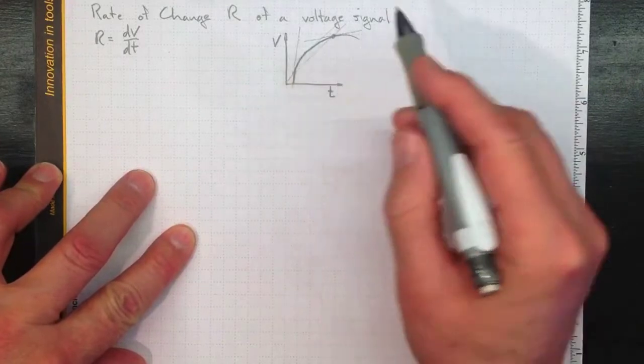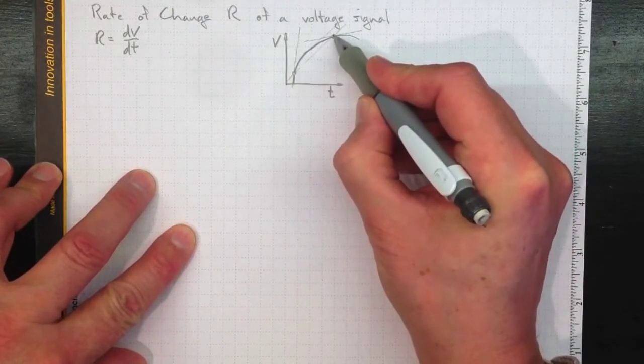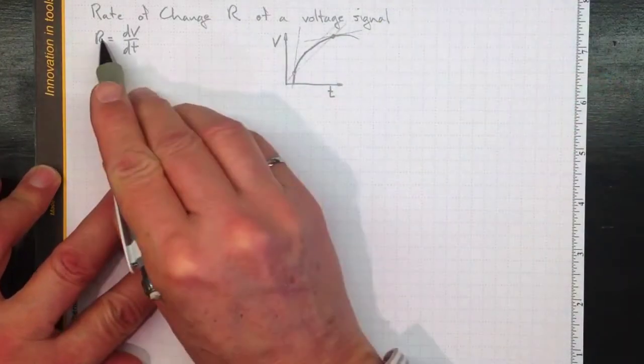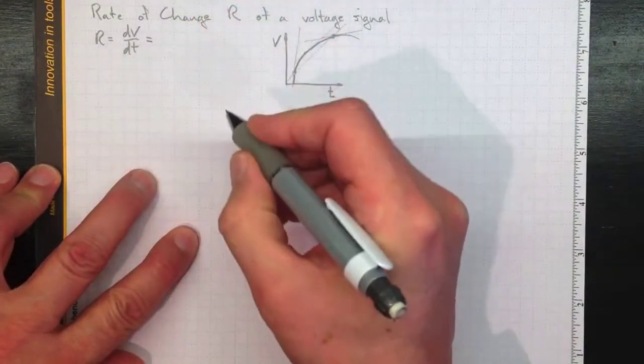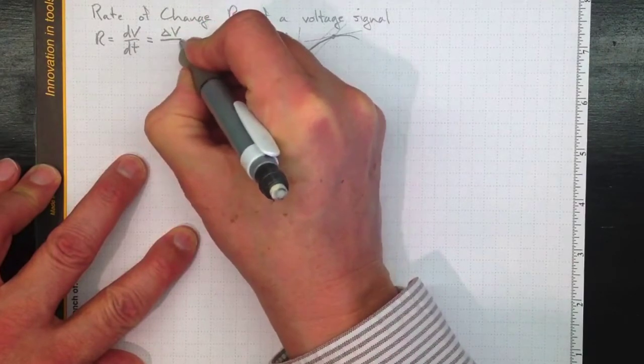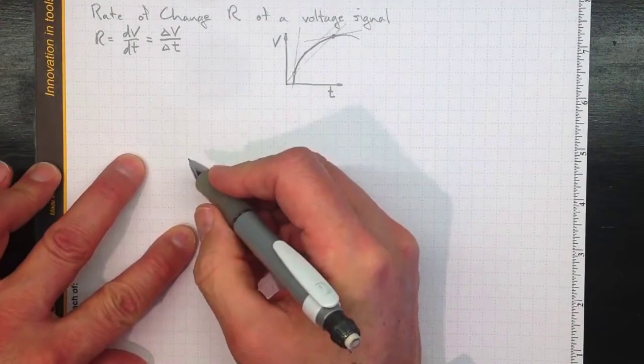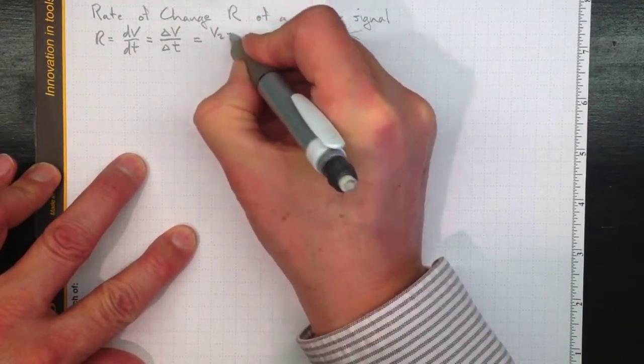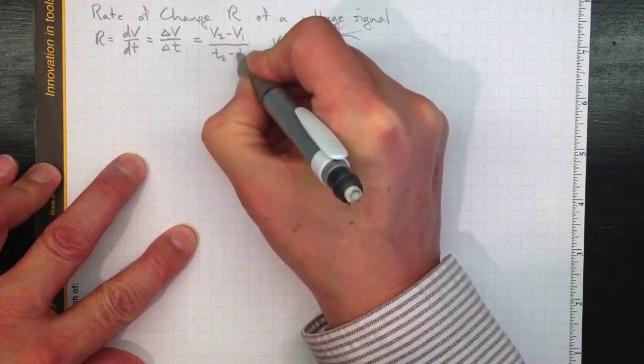then to measure that rate of change, basically we have to measure the actual voltage at two different points in time and then look at how much it changed over that length of time. So we take our derivative and we approximate it with a finite difference, the change in voltage divided by some short change in time, delta T. And that'll be just V2 minus V1 over T2 minus T1.